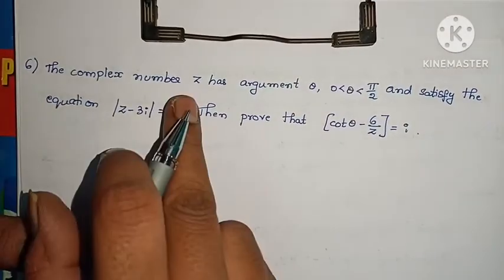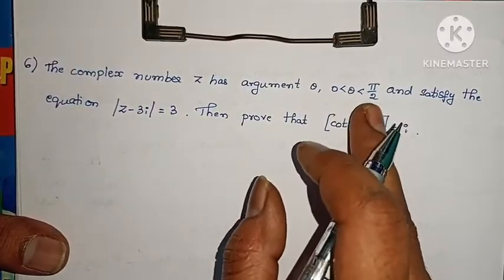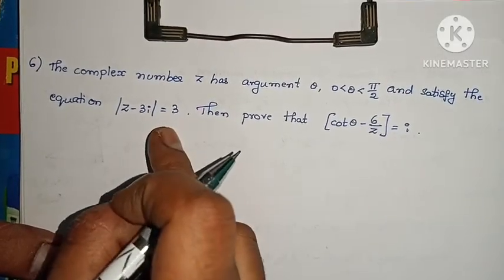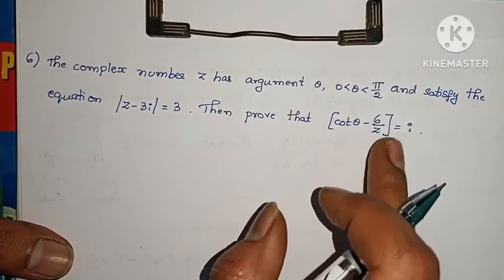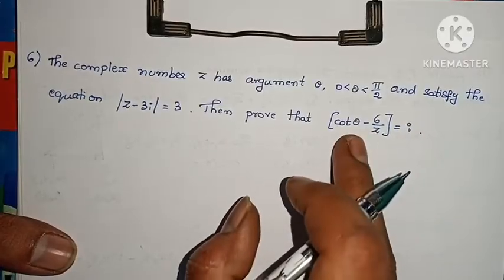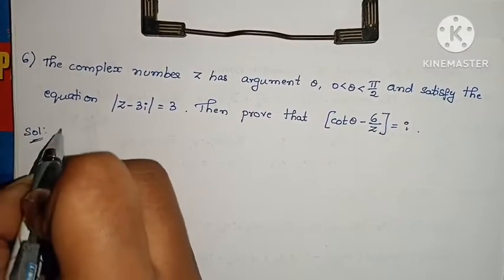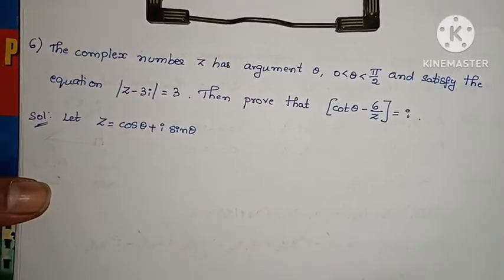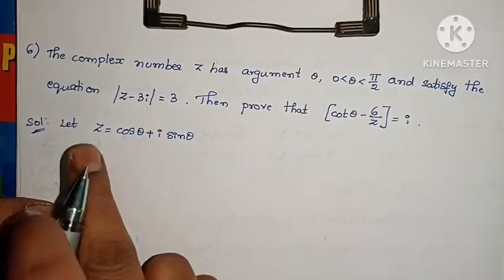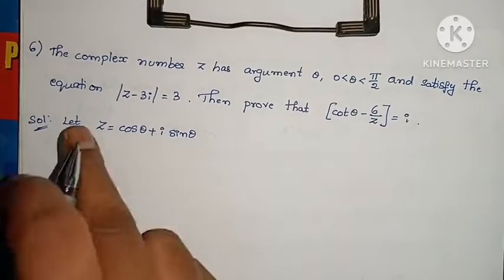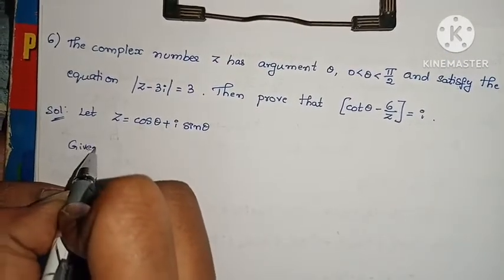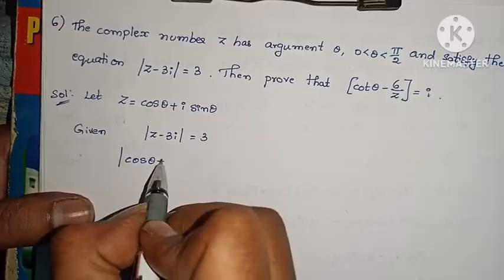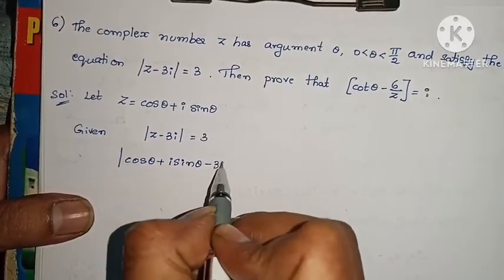Next question: the complex number Z has argument θ, where 0 < θ < π/2, and satisfies the equation |Z − 3i| = 3. We need to prove that cosθ − 6/Z = i. Let Z = cosθ + i sinθ. Given: |Z − 3i| = 3.